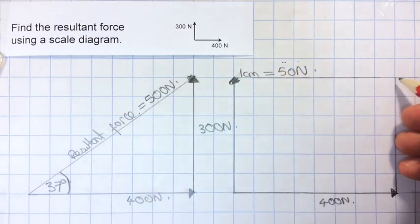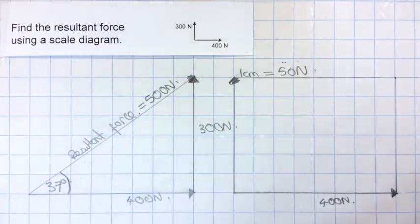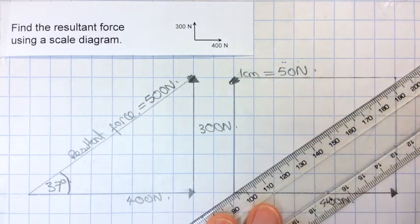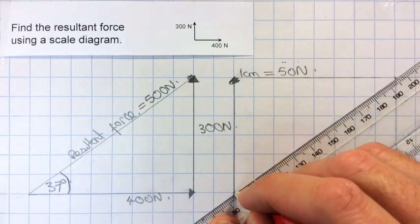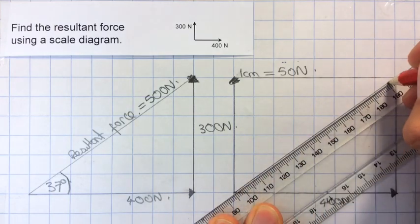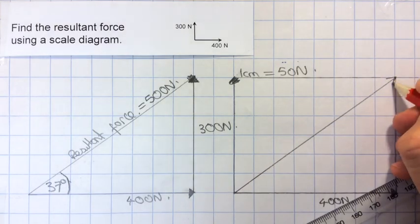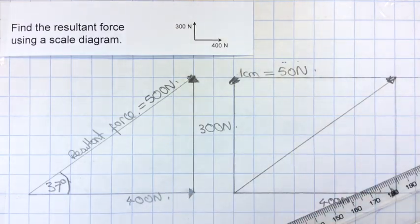And then my resultant vector is the diagonal across this rectangle. And if I draw that in, I end up with exactly the same thing.